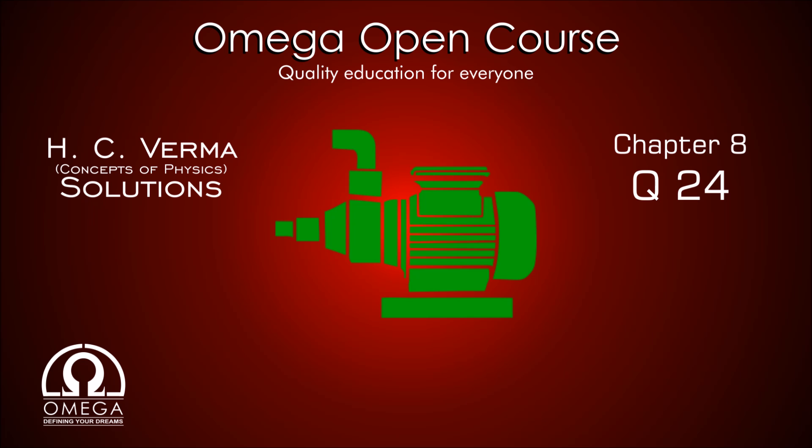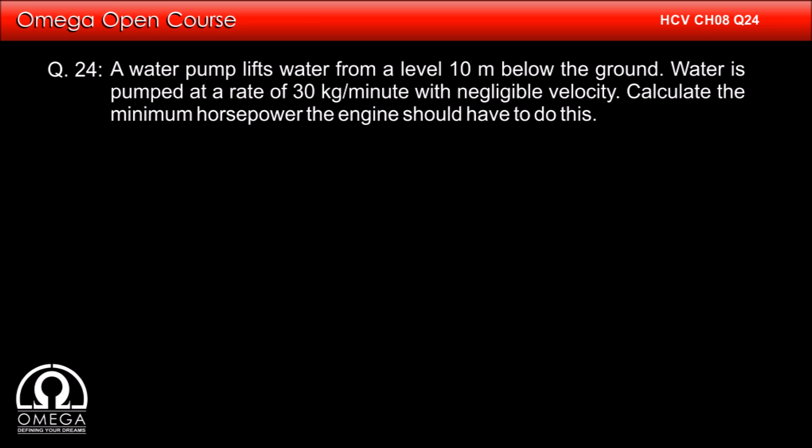Question Number 24: A water pump lifts water from a level 10 meters below the ground. Water is pumped at a rate of 30 kg per minute with negligible velocity. Calculate the minimum horsepower the engine should have to do this.